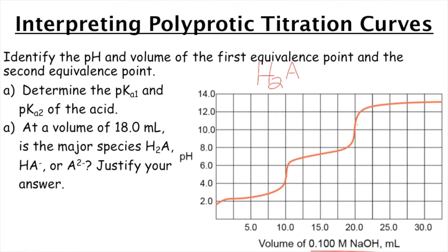Okay. So the first thing that we're asked to do is to identify the pH and the volume for both our first and second equivalence points. So I'm just going to make us a little chart right down here, first and second. So this is going to be our first and second equivalence points. First thing we want to look at is pH.